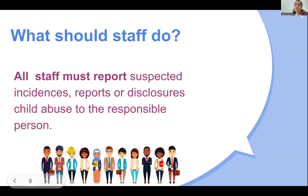These are the types of abuse children are exposed to. Now, what should staff do? All staff must report suspected incidences. If you happen to hear, see, or know that any child is being subjected to abuse, it is important that you report the suspected incidence to the responsible person. Every school has different practices — some schools have a child protection officer, others have a child carer or a team responsible for child protection. If you know of a child suspected of abuse, report to that responsible person.